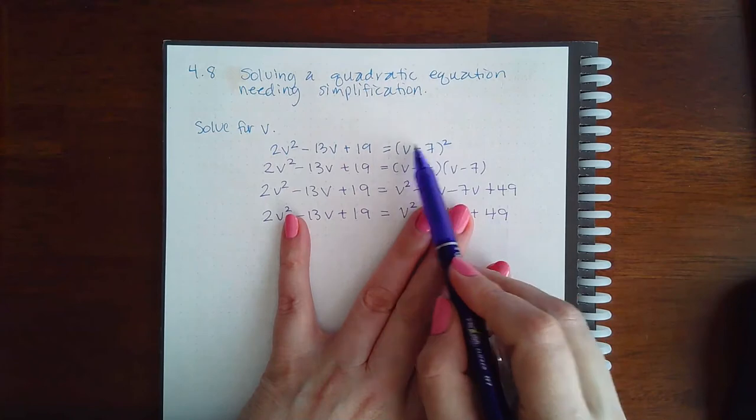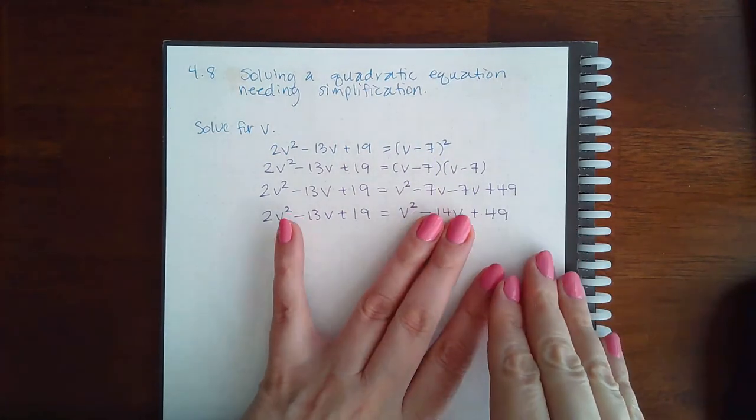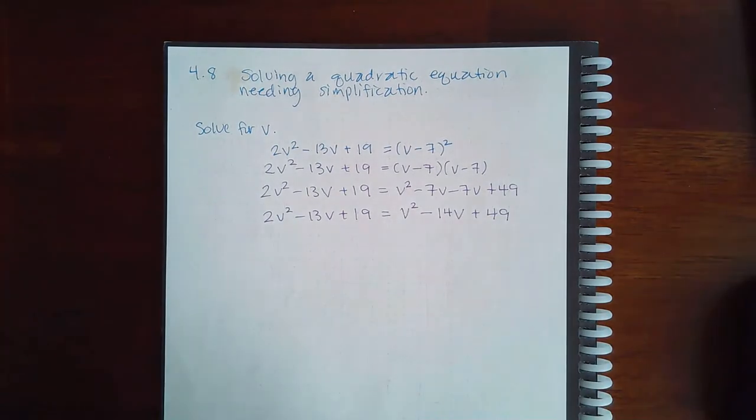If you try to square this erroneously, you're never going to get this middle term, that -14v. And then your whole problem is going to be off from the very beginning, just from squaring incorrectly.